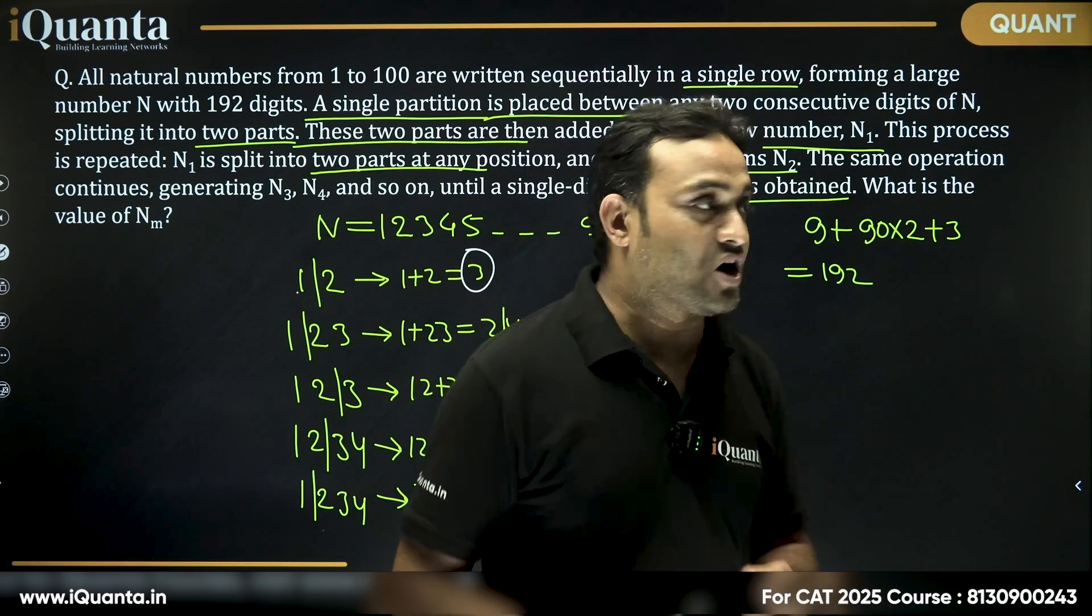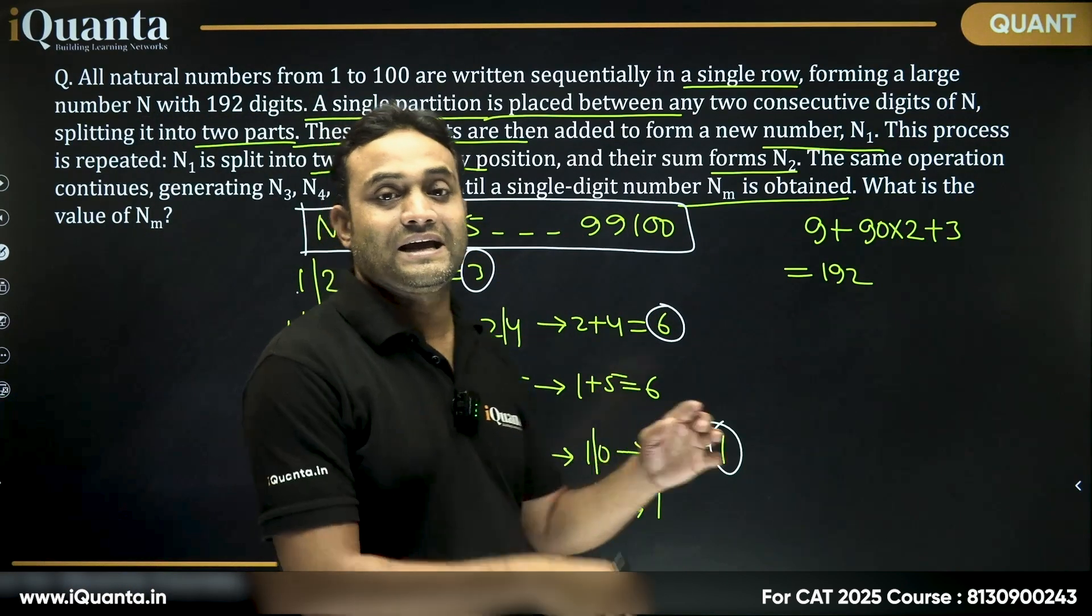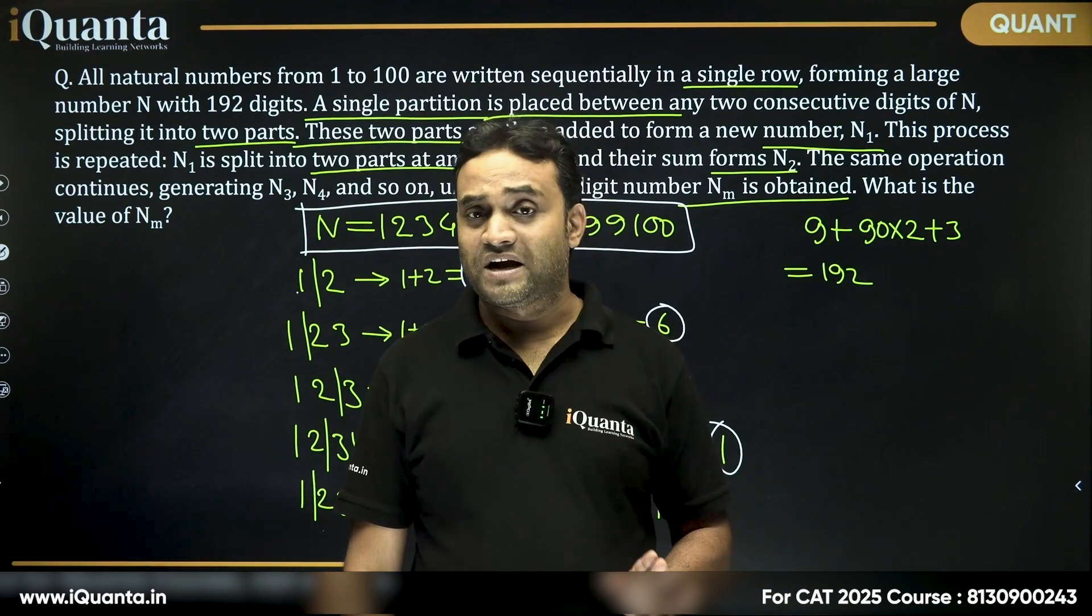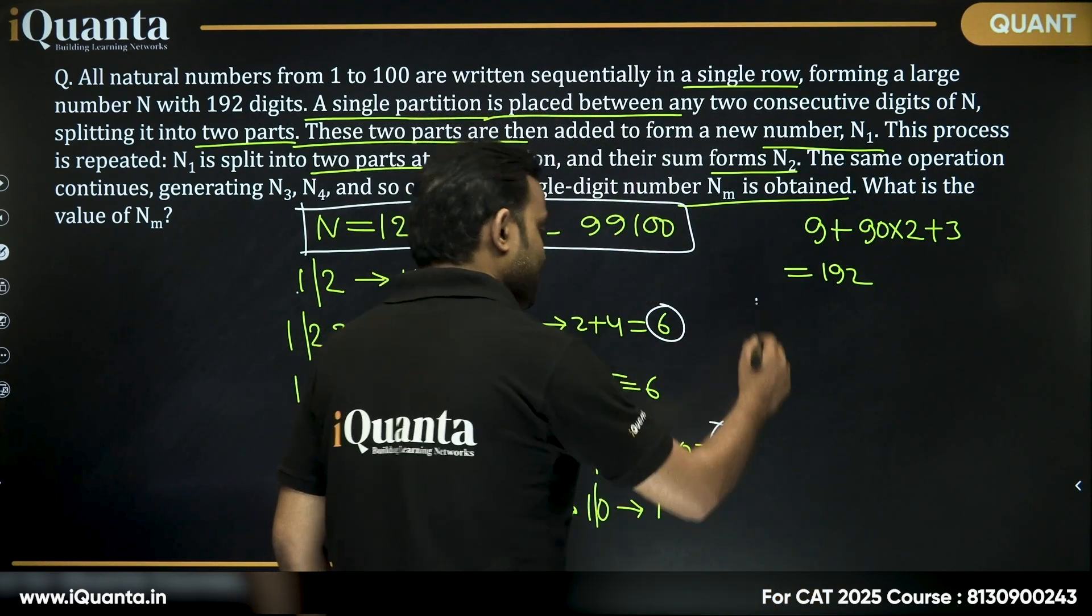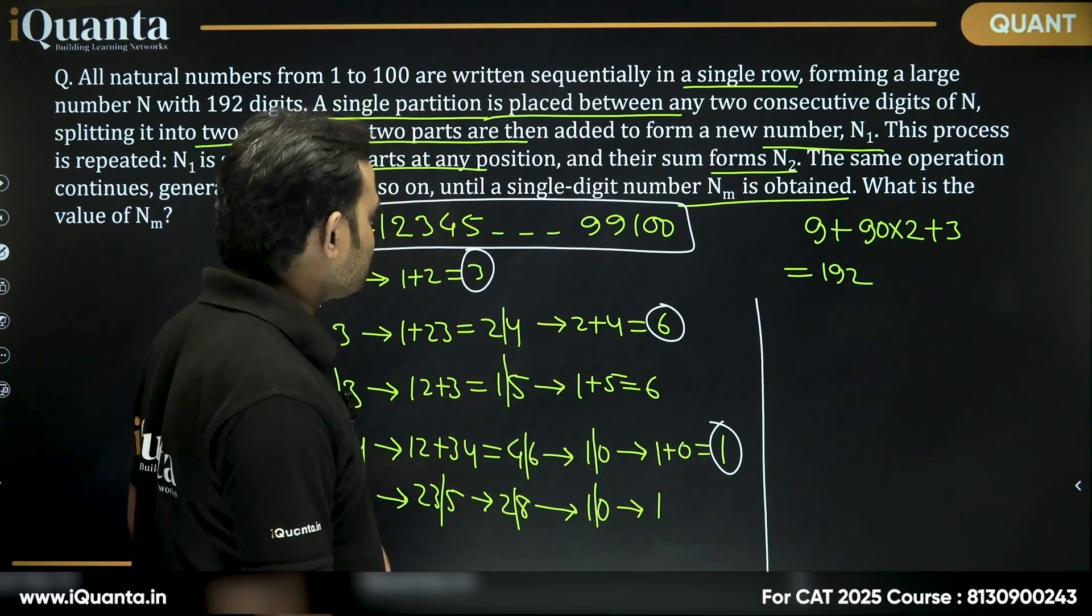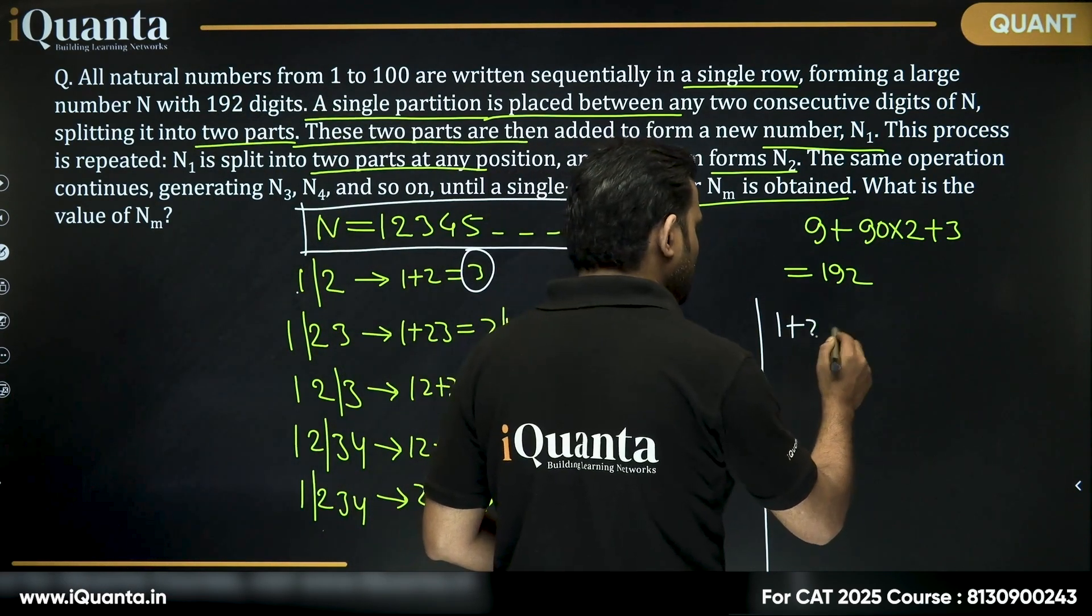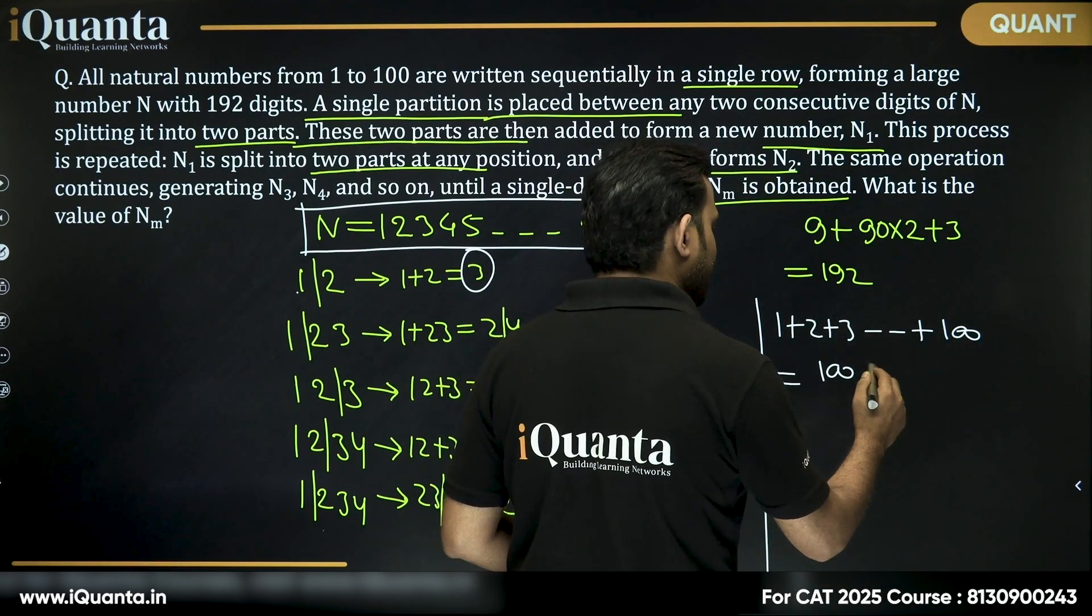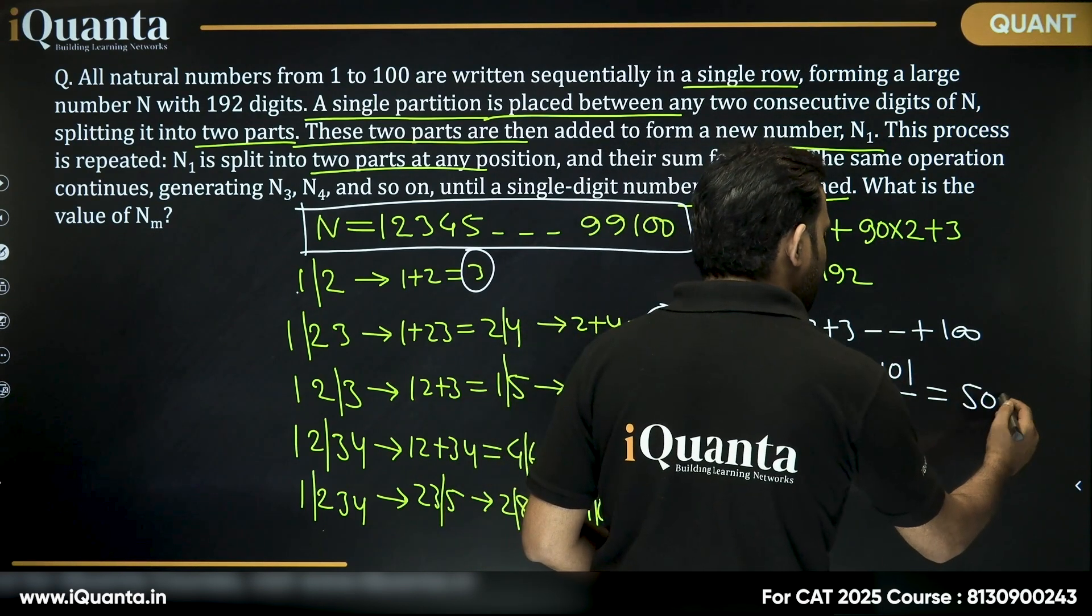So, it does not matter where do we start putting the partition in this number, or the next partition or any order of the partition, it does not matter. What matters is what is the remainder when n is divided by 9. So, what is n? If I add all of these numbers, that is nothing but, we can say, if I add these numbers, 1 plus 2 plus 3 till 100, this gives us 100 into 101 by 2, which is equal to 50, that is equal to 5050.